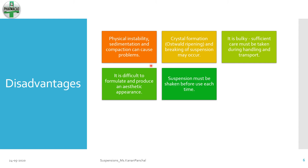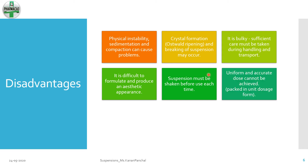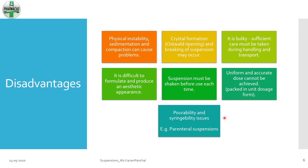Before you use or consume a suspension, it must be shaken. If it is not shaken before use, a uniform and accurate dose cannot be achieved. And if you want to achieve a uniform and accurate dose, you need a unit dosage form for suspension, which is not possible. Also, pourability and syringibility are certain issues which need to be addressed. Syringibility is highly important for formulating a parenteral suspension.